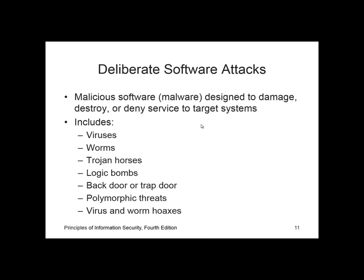Deliberate software attacks occur when an individual or group designs software to attack an unsuspecting system. Most of this software is referred to as malicious code, malicious software, or malware. These software components are designed to damage, destroy, or deny service to target systems. The most common instances of malicious code are viruses and worms, Trojan horses, logic bombs, backdoors, and denial of service attacks.